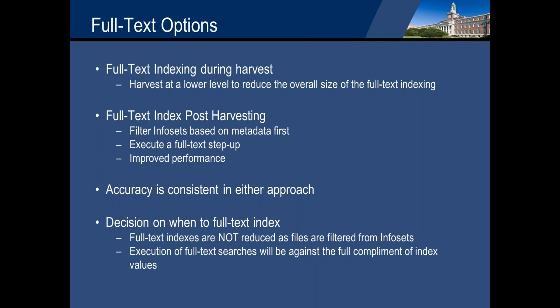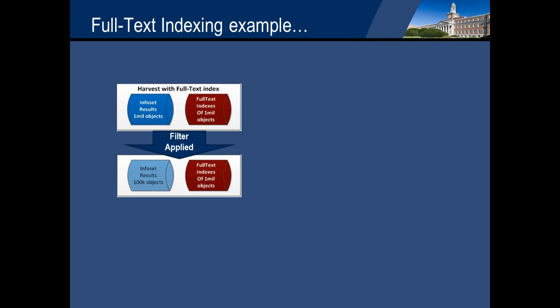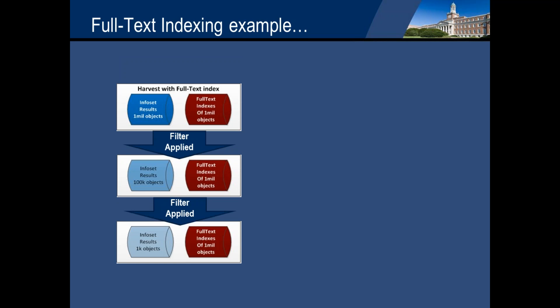As you filter an info set that has full text indexing, you are not reducing the number of full text indexes that you're going against. The execution of those full text searches will be against the full complement of the index values that were originally identified. For example, if you start with a harvest and full text index at the time of harvest and find a million objects, then filter down to 100,000 objects, when you run a full text search against those 100,000 objects, you're still running that full text search against the full complement of one million objects.